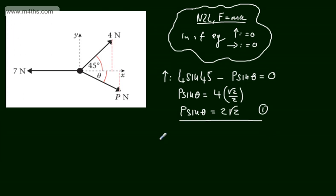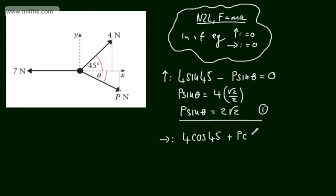Let's now consider resolving horizontally, taking the positive x direction. The horizontal component of the 4N force is 4 cos of 45 degrees — that's the adjacent of this little right-angled triangle. We've got the force P acting in the same direction, so the horizontal component is plus P cos theta. We don't yet know what theta is. And now we subtract the 7, which is in the opposite direction — minus 7 — and that's equal to zero.